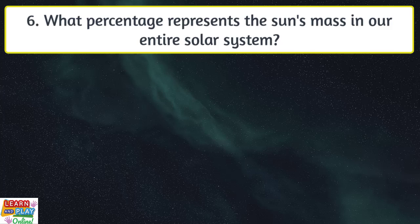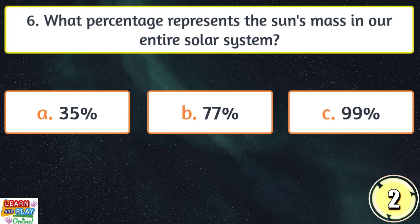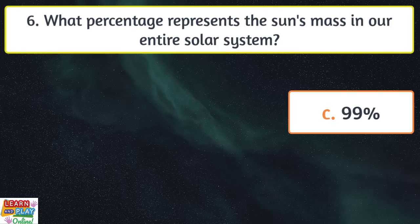Question six. What percentage represents the sun's mass in our entire solar system? 99%.